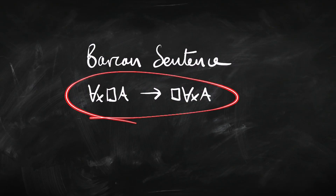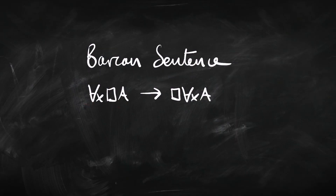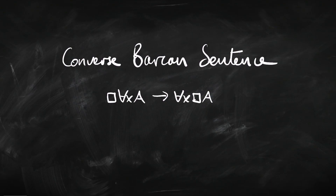What we're going to look at here is the Barcan sentence, the converse Barcan sentence, and how they relate to models in quantified modal logic. The Barcan sentence is a whole bunch of sentences — for any sentence A, there's a Barcan sentence. It's an if-then. Basically, it says there's interaction between the quantifier and the modalities. Specifically, if you've got 'for all' followed by a box, you can switch it around so that it's a box followed by 'for all.' The converse Barcan sentence goes the other way: if you've got a box followed by 'for all,' you can switch them to get 'for all' followed by a box.